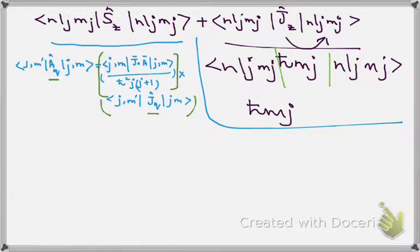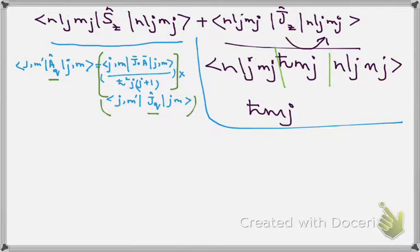So for Sz we can write this term equal to ℏmj. Now you have to evaluate J·S.